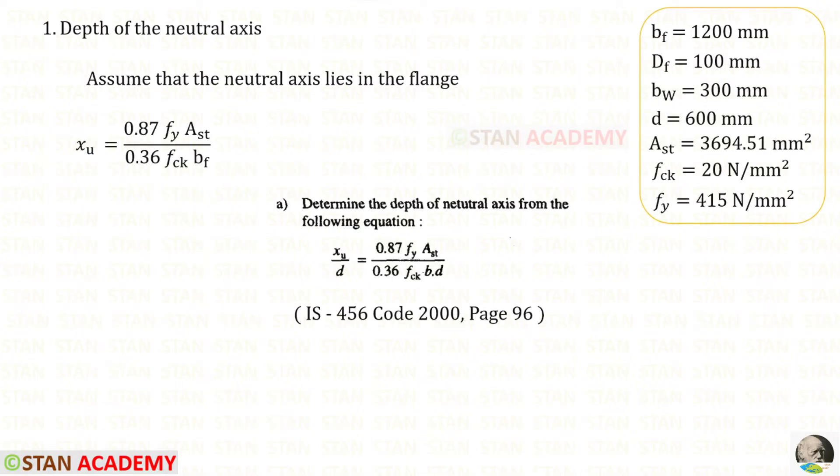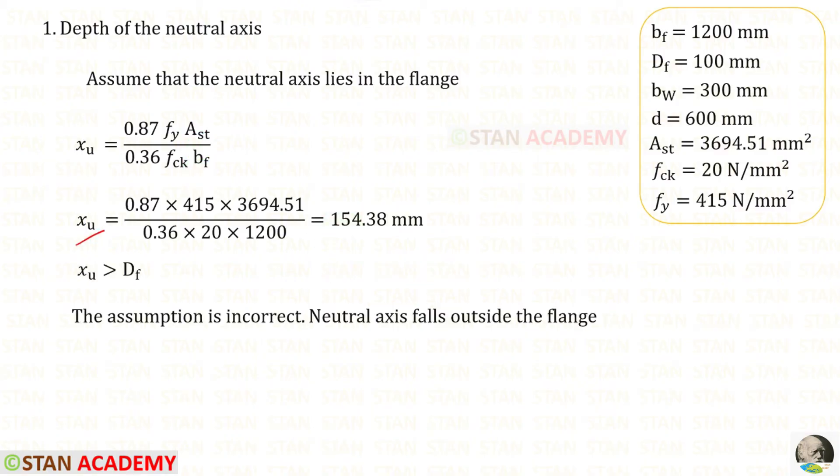The first step is to find the depth of the neutral axis. Let us assume that the neutral axis lies in the flange. From IS 456 code book page 96, we use the equation xu = 0.87 fy Ast / 0.36 fck bf d. In both denominators we have d, we can eliminate that. Instead of b we need to apply bf. For xu we will get 154.38 mm.